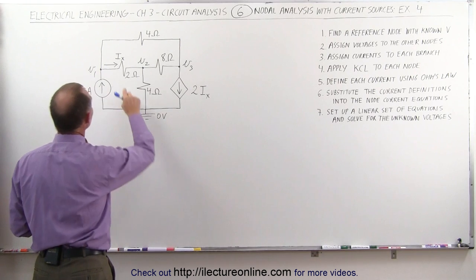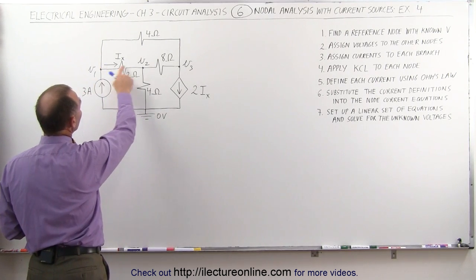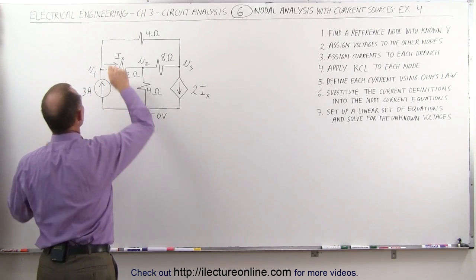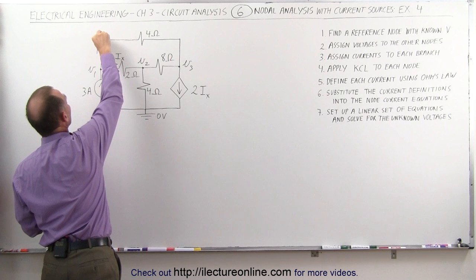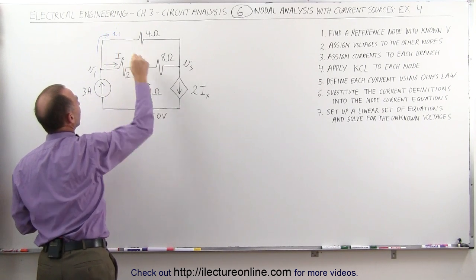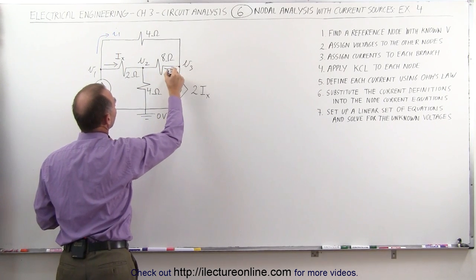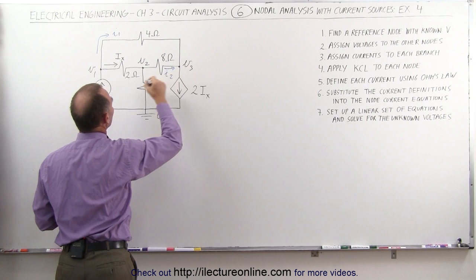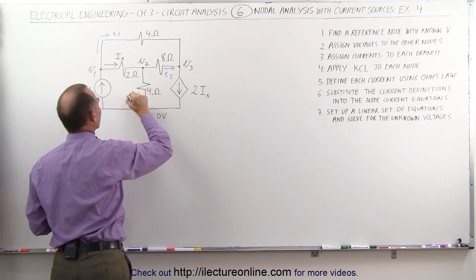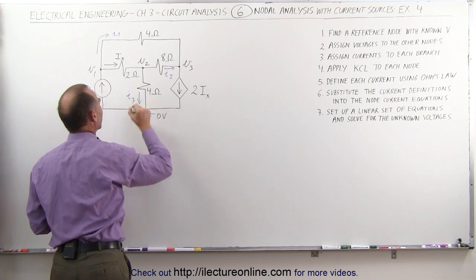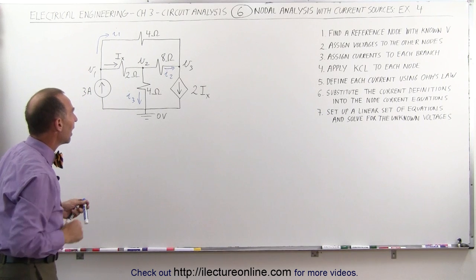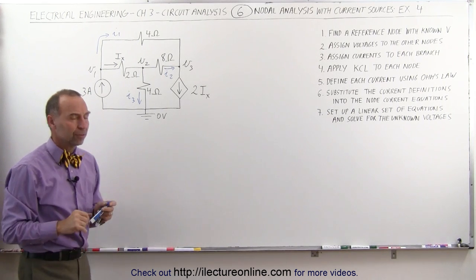We already have a current assigned to one branch — we call that I sub x. We call the current through the next branch I1, the current through the next branch I2, and the current through the last branch I3. So we'll have three additional currents besides I sub x.